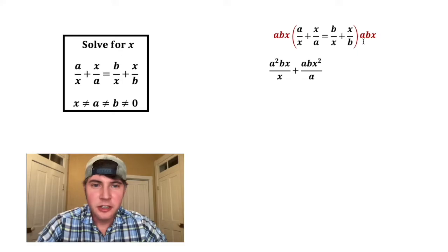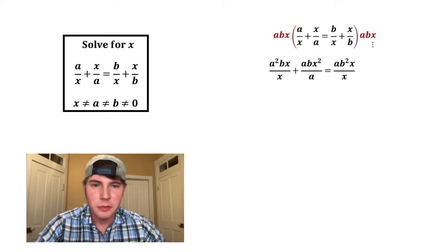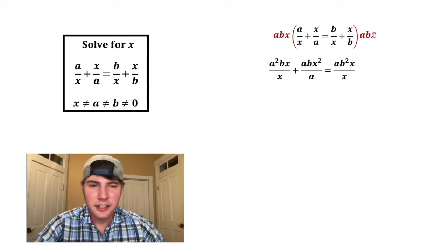And this is going to be equal to a, and then b squared this time, because we have b times b, and then there's still an x, and that's over x. And then this ends up being abx squared over b.